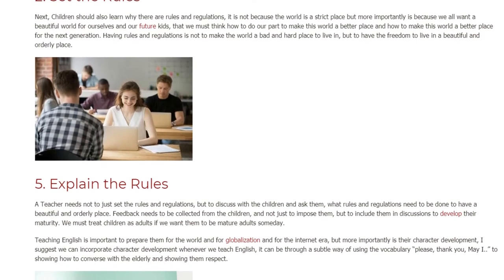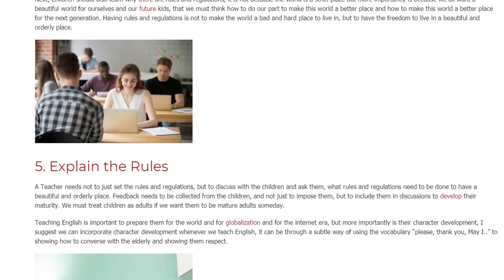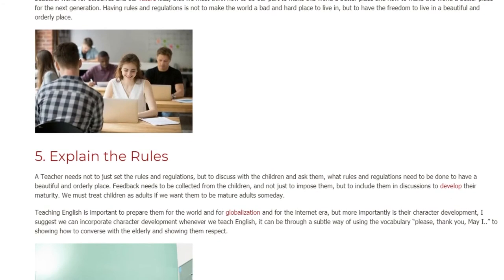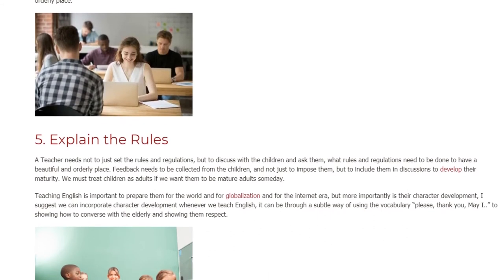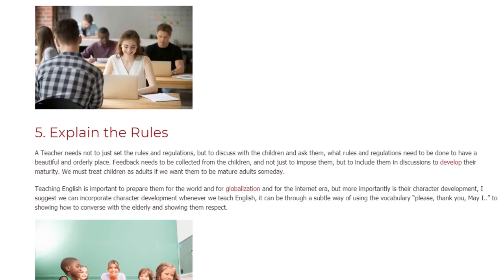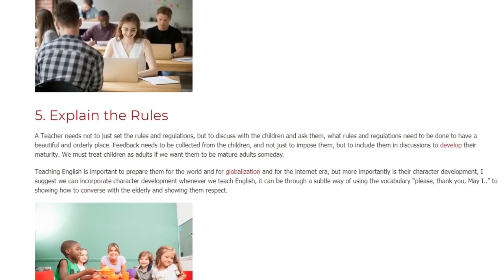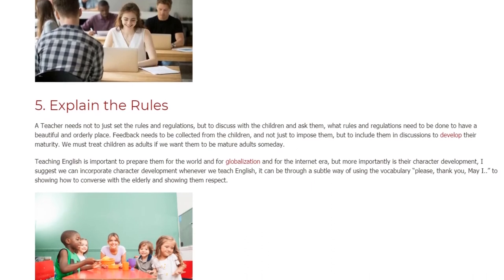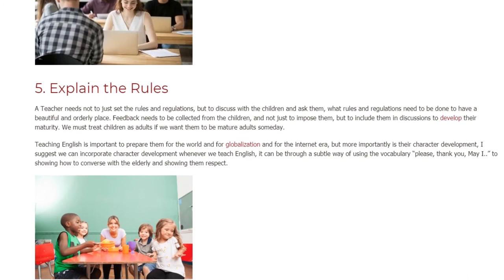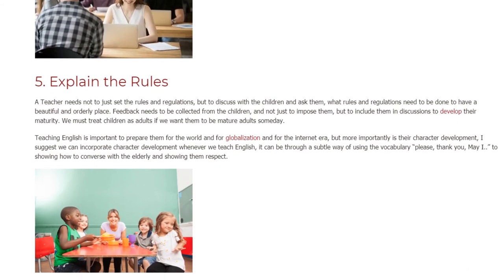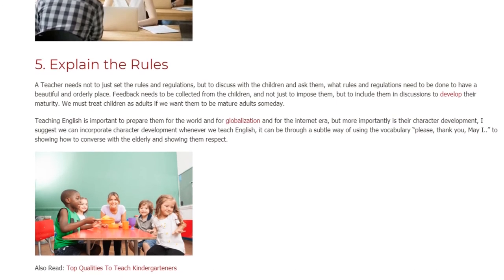Step 3: Explain the Rules. A teacher needs not to just set the rules and regulations, but to discuss with the children and ask them what rules and regulations need to be in place to have a beautiful and orderly environment. Feedback needs to be collected from the children, and not just imposed on them, but including them in discussions to develop their maturity. We must treat children as adults if we want them to be mature adults some day. Teaching English is important to prepare them for the world, for globalization, and for the internet era, but more importantly is their character development.